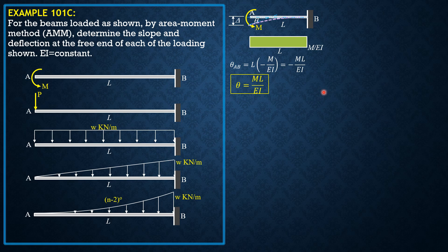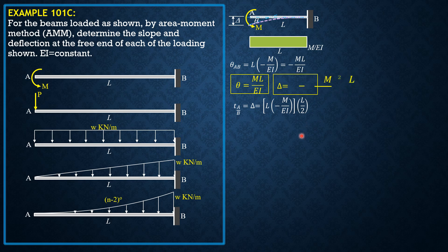For the deviation of A relative to the tangent at B — which is automatically the deflection delta — it equals the area L times negative M over EI, times the moment arm with respect to A, which is L/2. Therefore delta = -ML²/2EI.